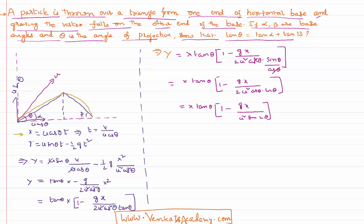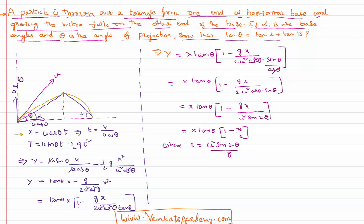Since 2 sin theta cos theta equals sin 2 theta, and the range R equals u squared sin 2 theta divided by g, the denominator simplifies to R. Therefore the equation of the projectile path becomes: y equals x tan theta times (1 minus x over R), where x is the horizontal distance and y is the vertical distance.